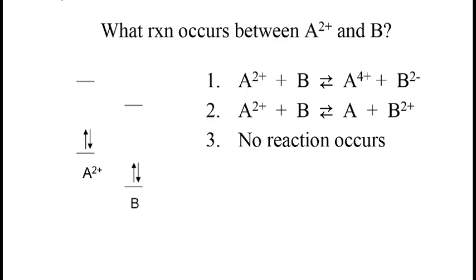Now, will electrons spontaneously go from A²⁺ to B? No. In order to do so, they would have to go uphill in energy. Will they transfer from B to A²⁺? No. Again, they would have to go uphill to do so. So in this case, no reaction occurs.